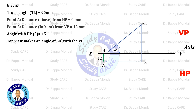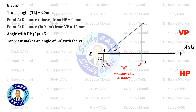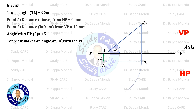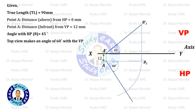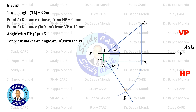Measure the AB1 distance and draw an arc with that radius making center point A. Now draw a line at a 60 degree angle with the AB1 line. The previously drawn arc and this line will intersect at point B. This AB is the top view.